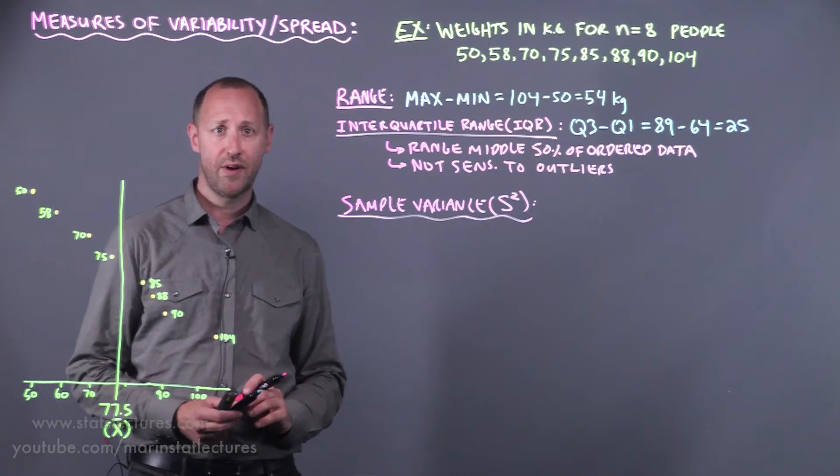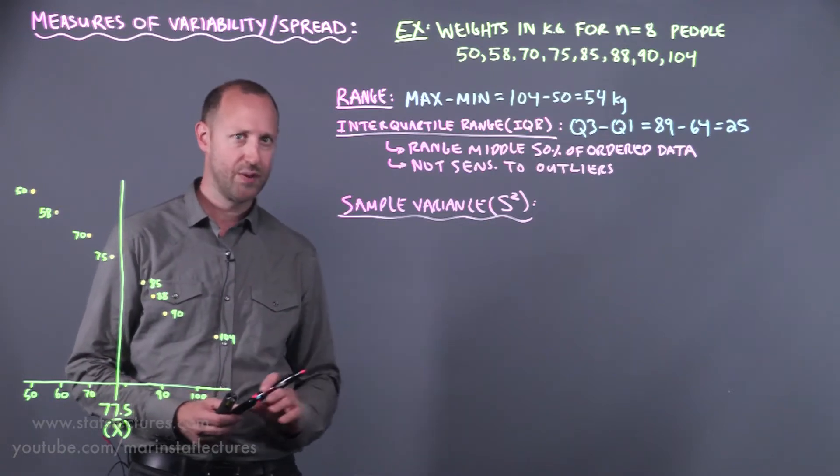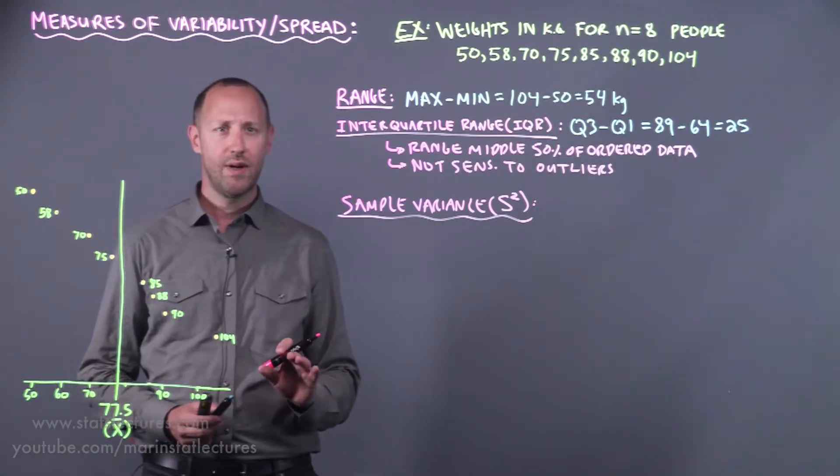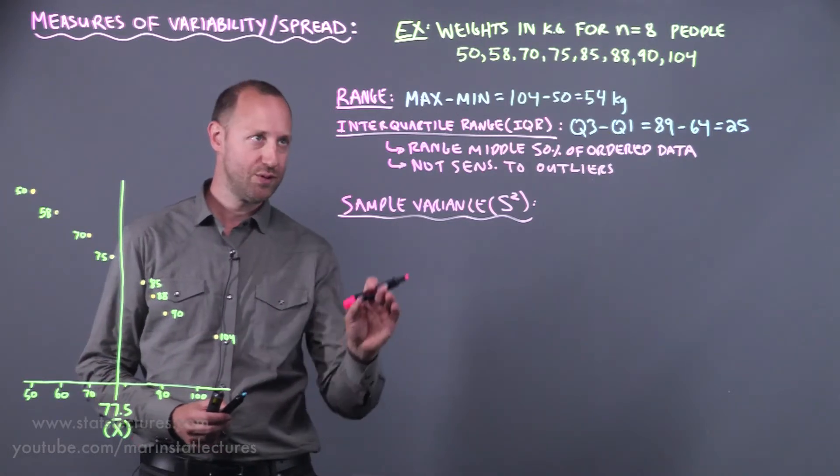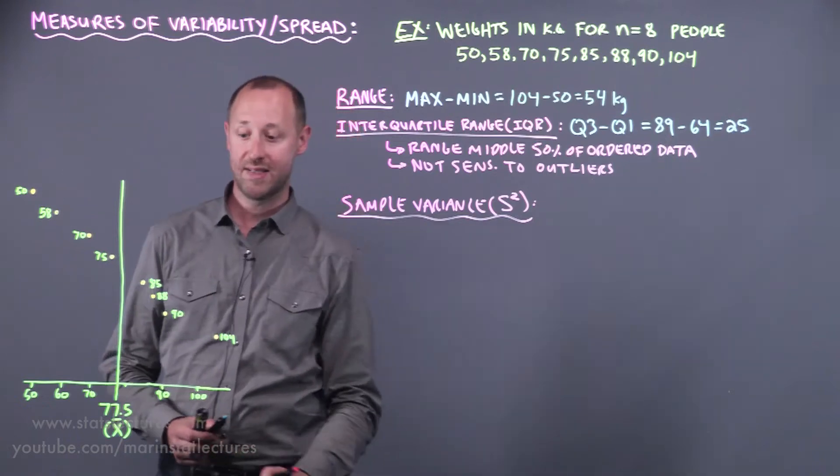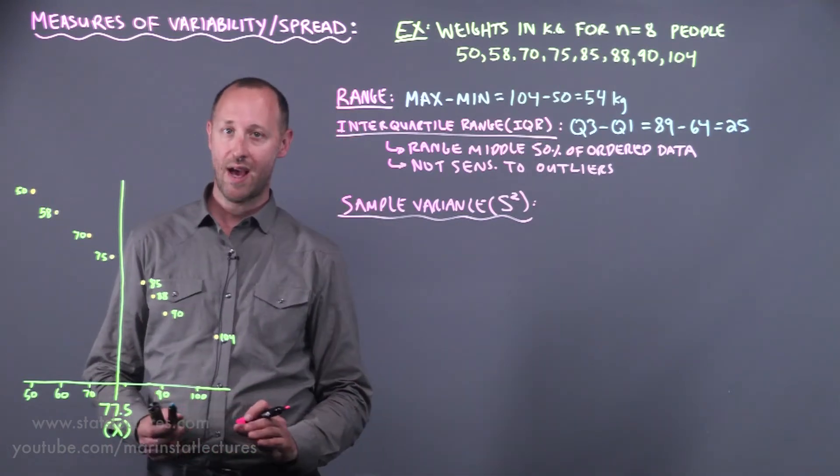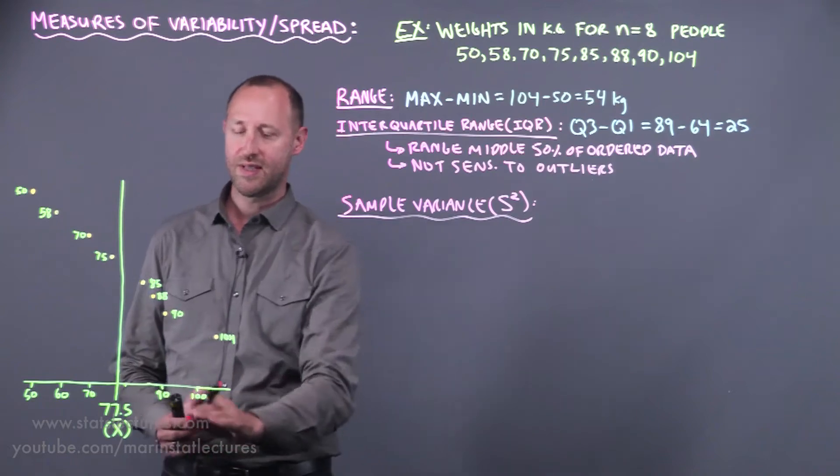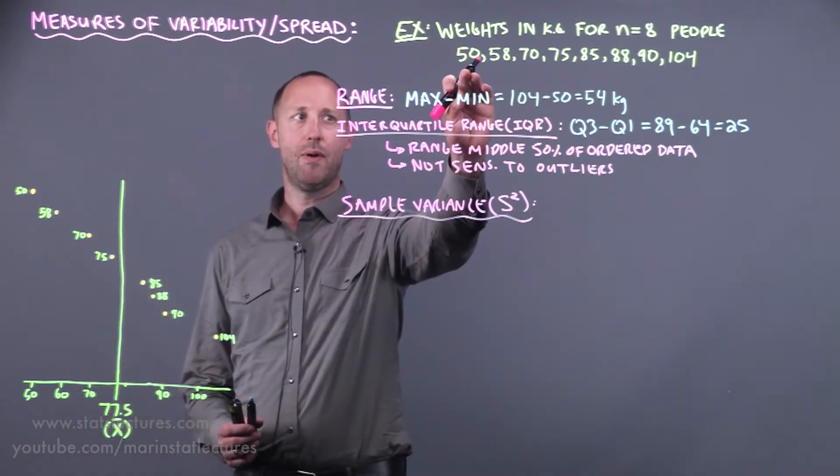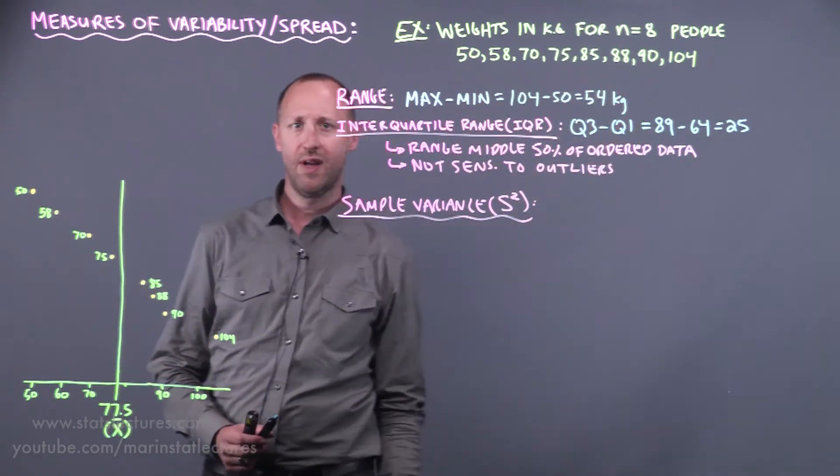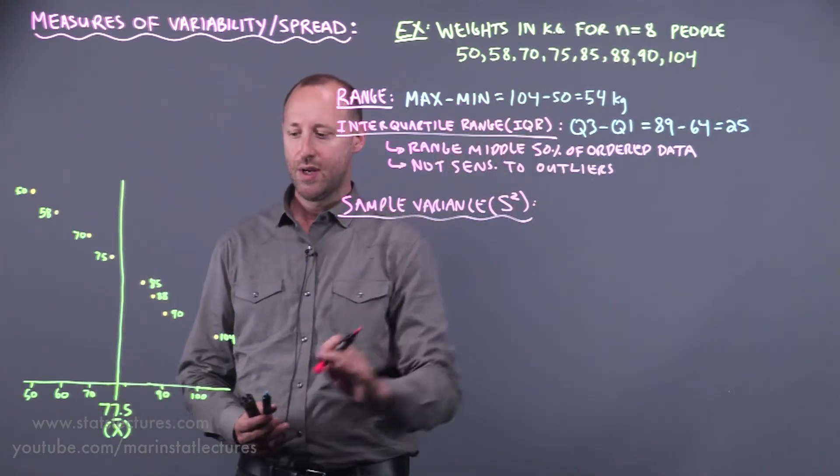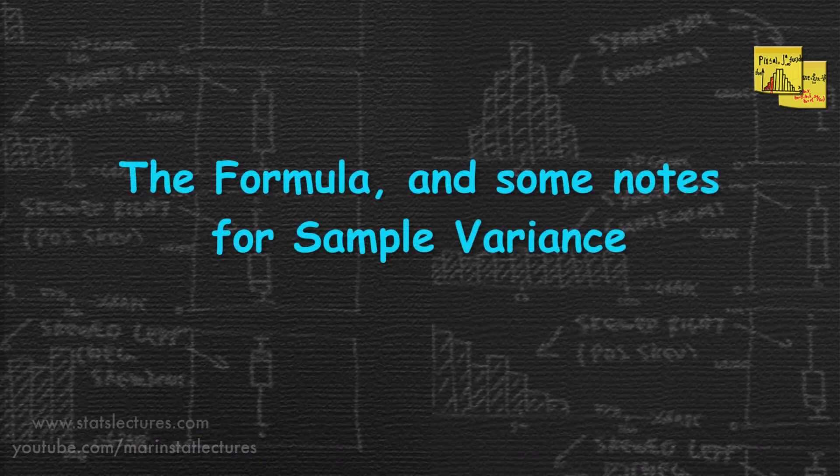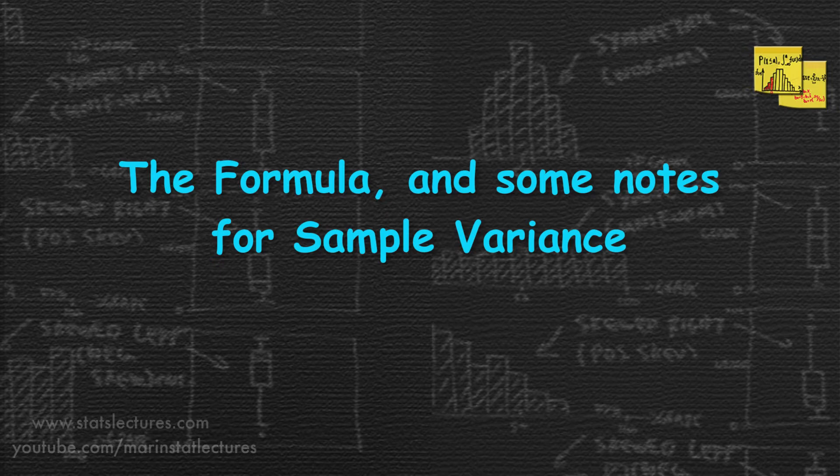The idea of the sample variance or sample standard deviation is that we want to get some number to help us estimate on average how far our individuals' weights are getting from that sample mean of 77.5 kilograms. The mean of these was 77.5, some people went below, some people went far above, and we want to estimate that tells us on average how far individuals' weights are moving from that mean. For now let's just write down the formula and start to talk about the concept.